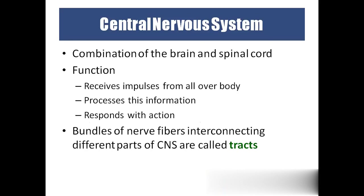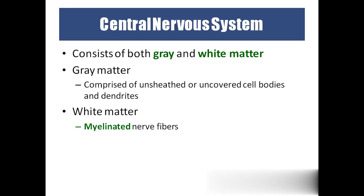The central nervous system means brain and spinal cord. The brain receives impulses from all over the body, processes information, and responds. If we receive sensory input, we process the sensation and react accordingly. The bundles of nerve fibers interconnect different parts of the CNS through tracks. The central nervous system consists of grey matter and white matter. In grey matter, we have only cell bodies and dendrites. In white matter, we have axons — it is white because of the myelin sheath, which is a fatty covering.